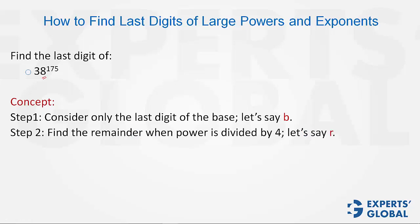Step 2: Find the remainder when the power is divided by 4. In this case, 175 divided by 4 - find the remainder, call it r. And Step 3 is simply b raised to power r. That's all.